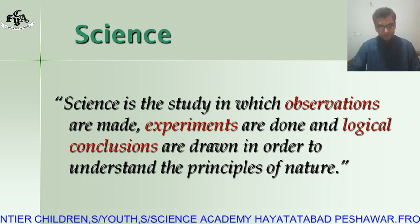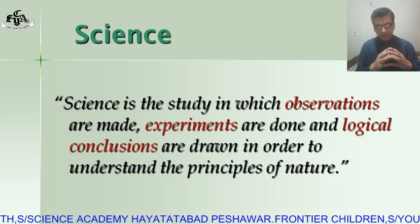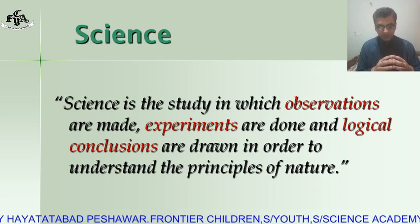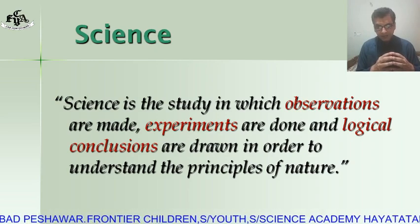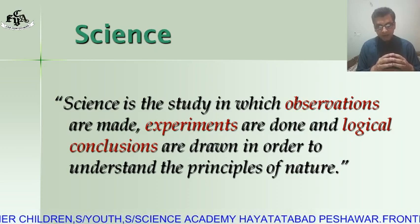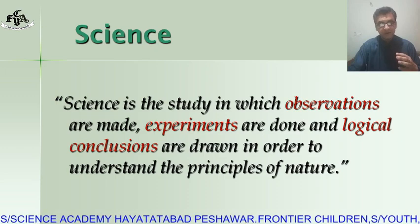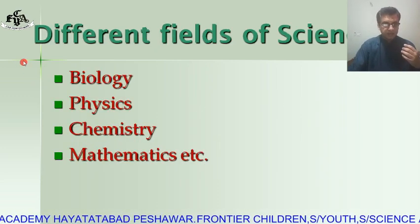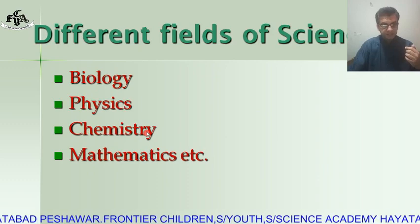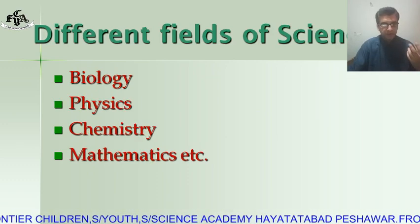In past times, all scientific information was included under one head called science. With the passage of time, scientific information increased manifold and this knowledge was then classified into different branches like biology, physics, chemistry, and mathematics. These are some of the important branches of science.